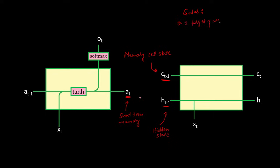There are three kinds of gates in LSTM: one is the forget gate, another is the input gate, and the third is the output gate. A gate allows certain information to pass through and restricts other information. The forget gate allows the model to forget some information or retain some information. The input gate is responsible for adding new information — when the model sees new input x, the input gate allows only useful information to be added. The output gate is responsible for deciding what to produce as an output.